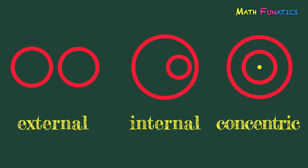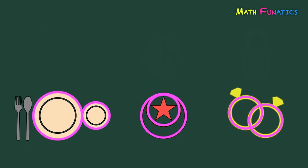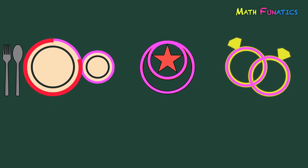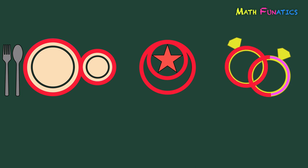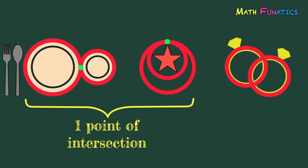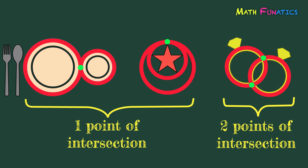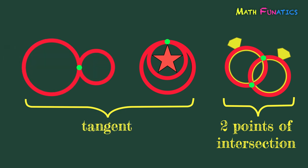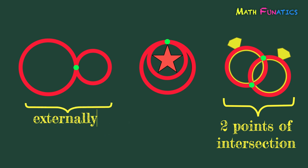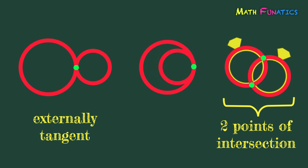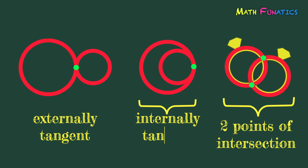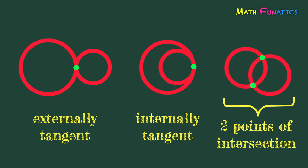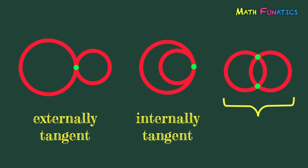Let us analyze each pair of circles in the next three figures. All these pairs of circles do meet or touch each other at certain points. Each pair of circles in the eating set and lantern has one point of intersection, while the two overlapping rings have two points of intersection. If the circles have one point of intersection, then we use the term tangent. If the circles intersect at one point externally, then we call this externally tangent. And if the circles intersect or meet at two points, then this is what we call secant.